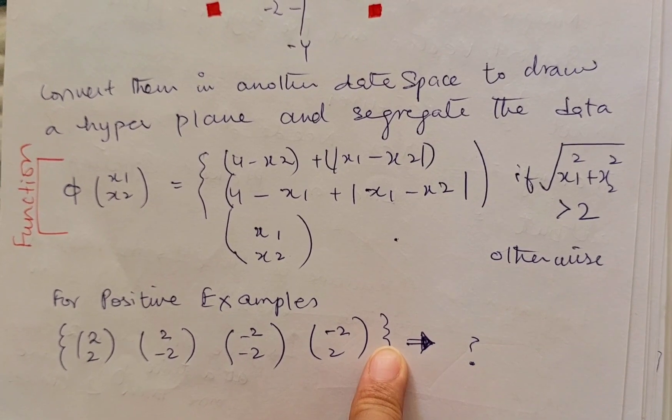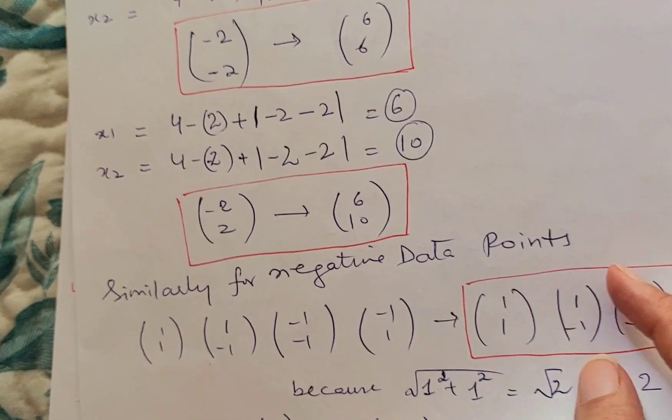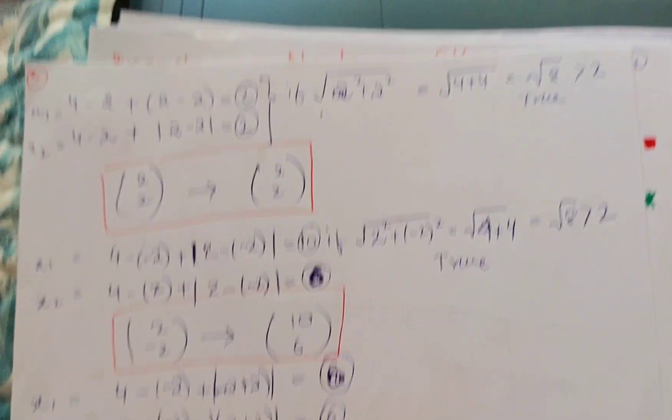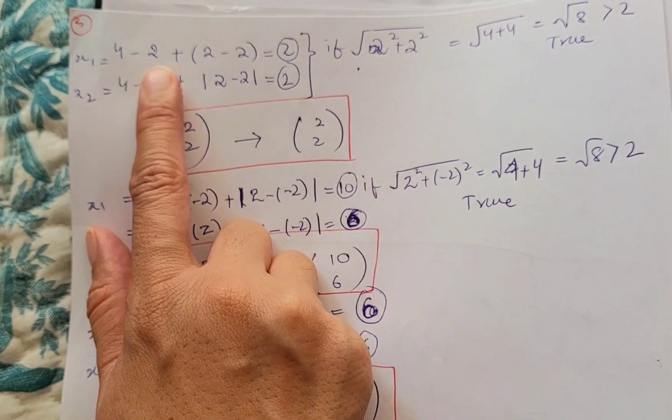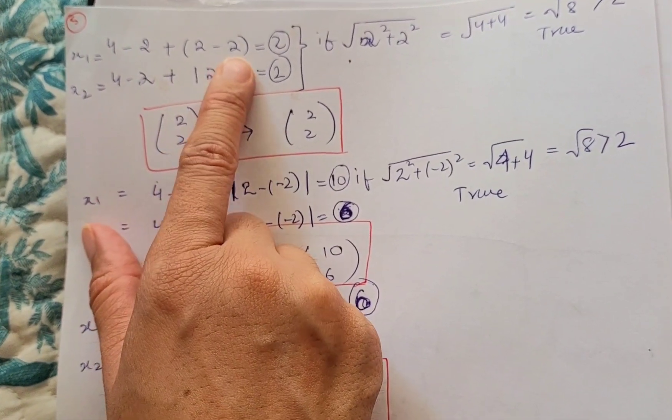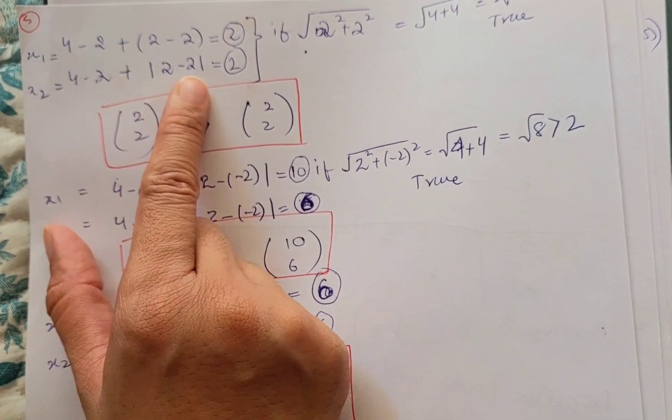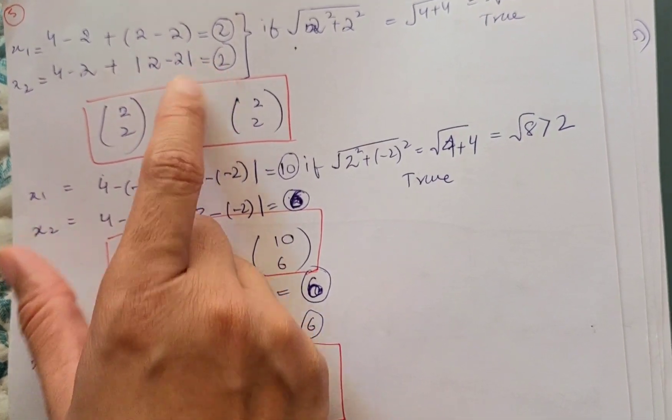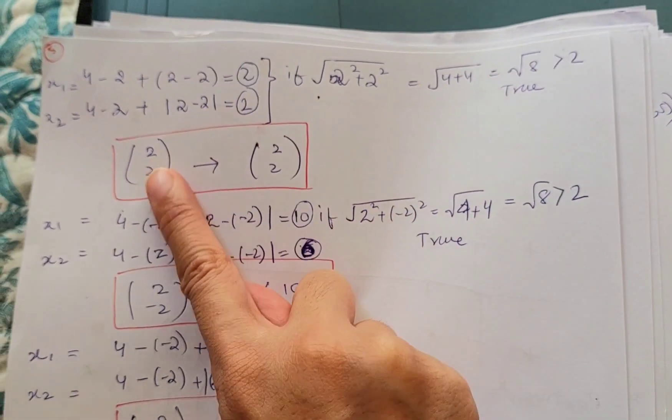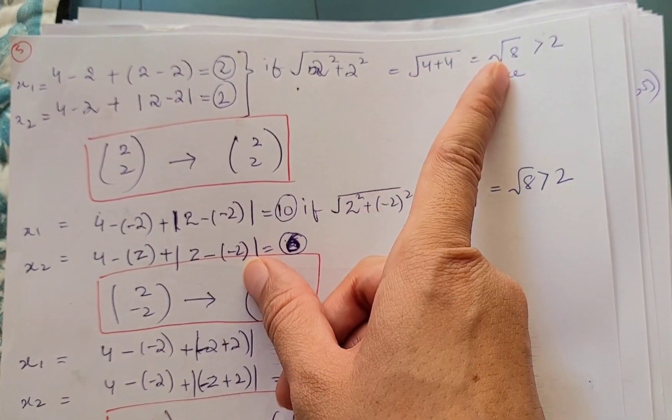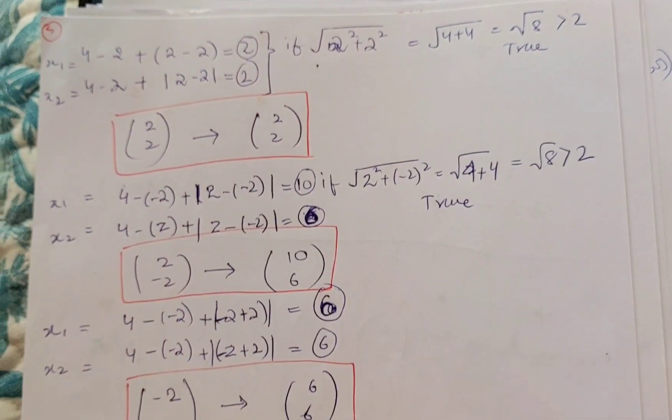So let's do it for the positive labeled classes first. First of all, we have x1 = 4(-2) + 2(-2), getting the answer like 2. Similarly, for x2, 4(-2) + 2(-2), and it is coming out to be 2. So if I sum up these points 2 and 2, their squares and under root them, it is coming out to be √8, and √8 is larger than 2. That is why I had used this equation.